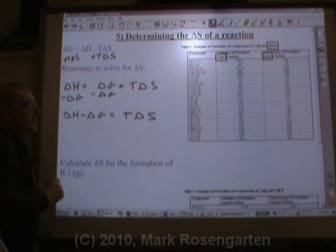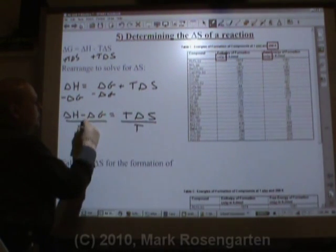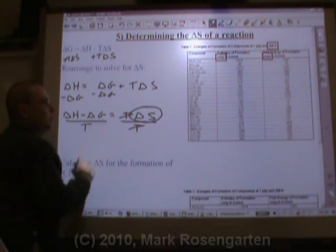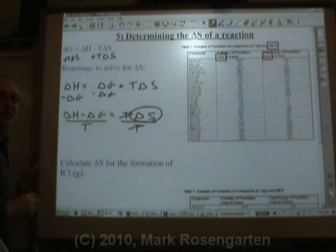The final step is to get delta S by itself. To do that, we divide both sides by temperature. That gets rid of temperature and leaves us with delta S.